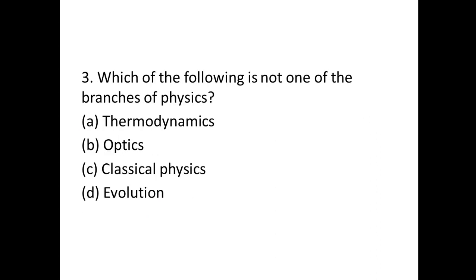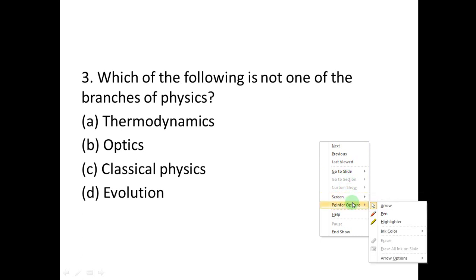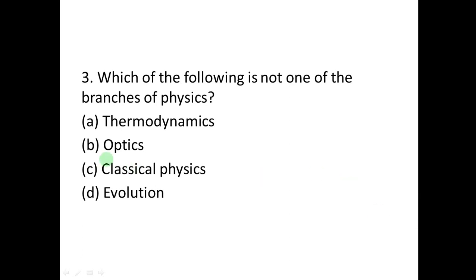Question number three: Which one of the following is NOT one of the branches of physics? A: Thermodynamics, B: Optics, C: Classical physics, D: Evolution. The answer is evolution. Thermodynamics deals with energy and its transfer, optics deals with light.